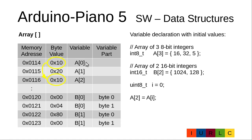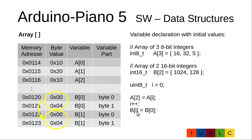So we copy A[0] to A[2] — we copy the contents of A[0], which is hex 10, to A[2]. We then increase e by 1, so e is now 1. Then we make the assignment B[e] = B[0], which means B[1] = B[0], so we copy B[0] to B[1]. The value hex 0400 is copied to variable B[1].